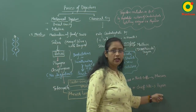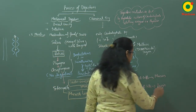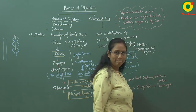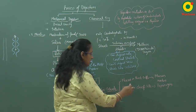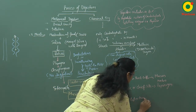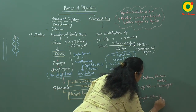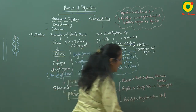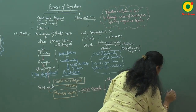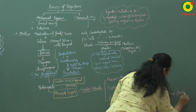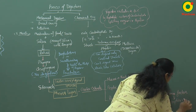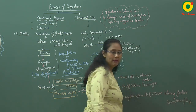Pepsin remains in inactive form as pepsinogen. It is activated by HCl produced by the parietal or oxyntic cells. Parietal or oxyntic cells secrete HCl and some intrinsic factors. These intrinsic factors help in absorption of Vitamin B12. This HCl is responsible for the activation of the inactive pepsinogen.